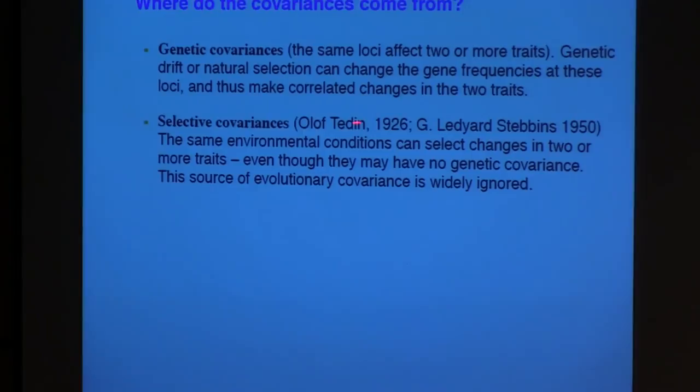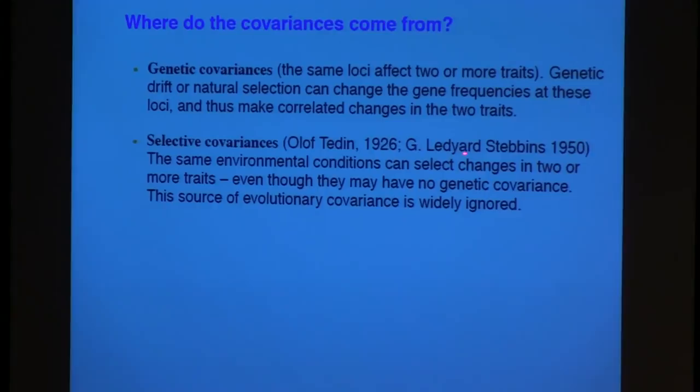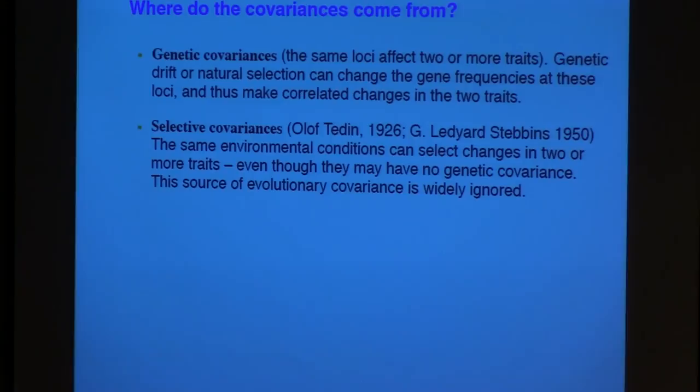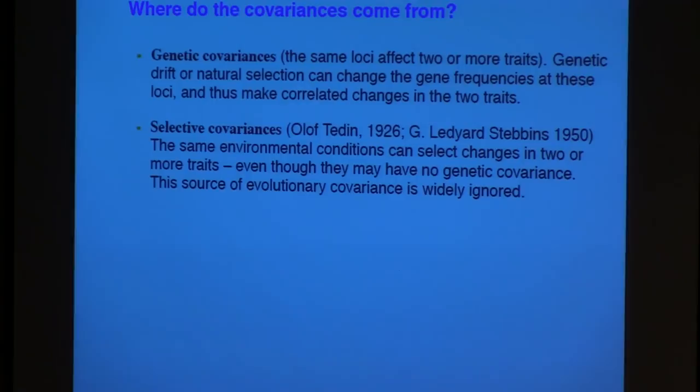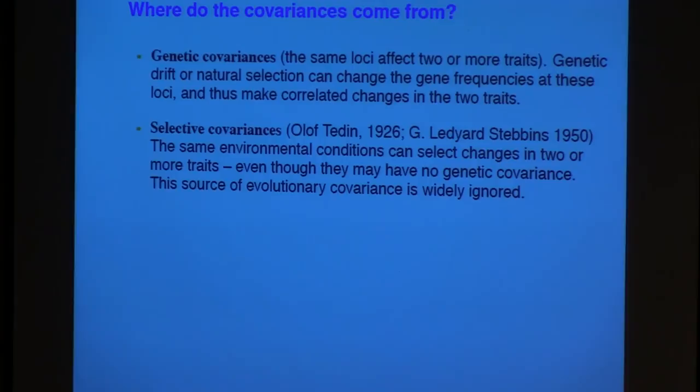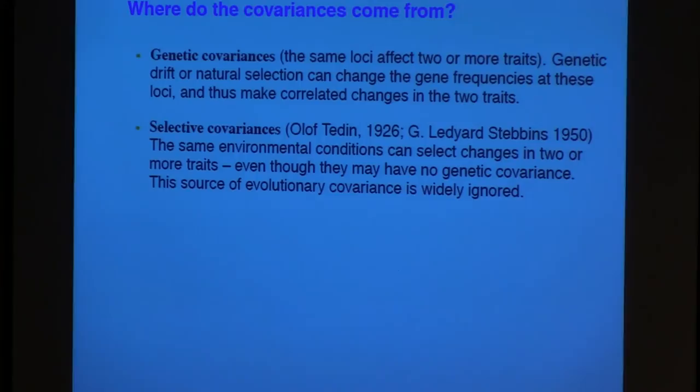But there's another thing called selective covariance or selective correlation. And it was actually first introduced by a Swedish plant breeder, Olaf Tedin, in 1926. And it was emphasized by Ledyard Stebbins in his famous book, Variation and Evolution in Plants, in 1950, I believe one of the most famous books in plant evolutionary biology. And he pointed out his use of this term selective covariance. What that is, is that environmental conditions can select for changes in two characters in the same direction, even though those characters are not genetically correlated.